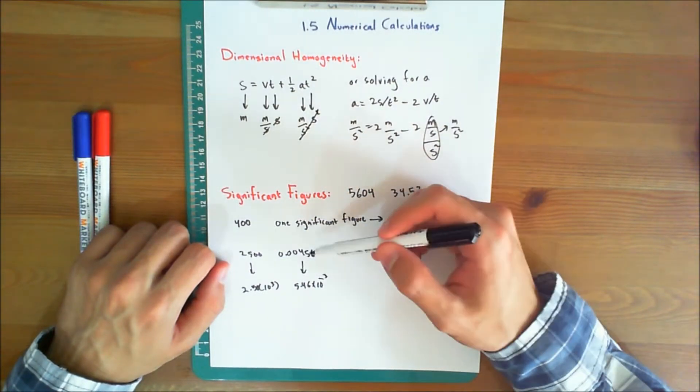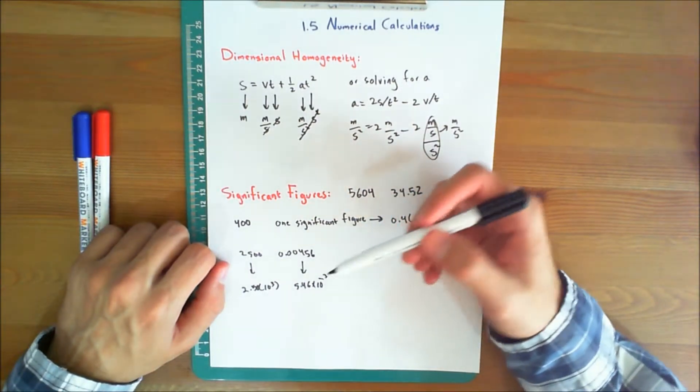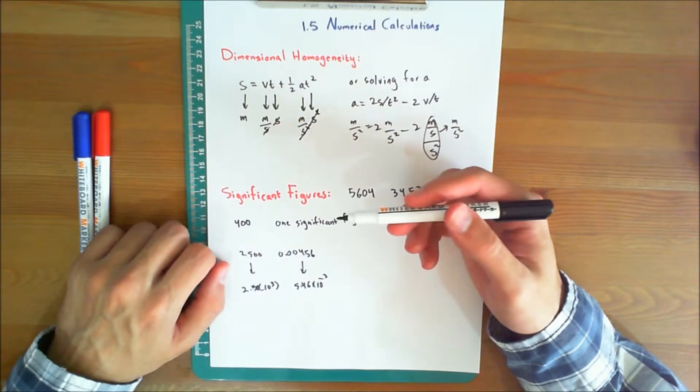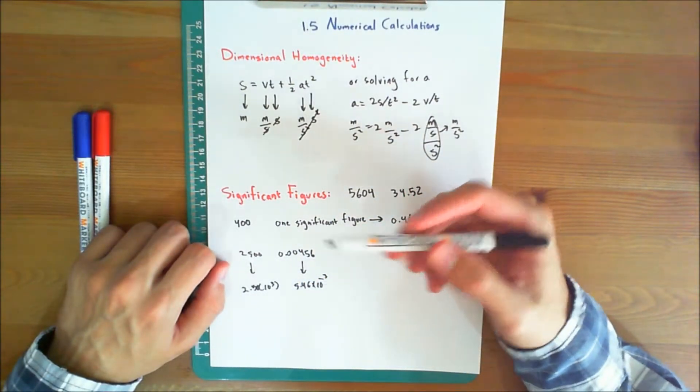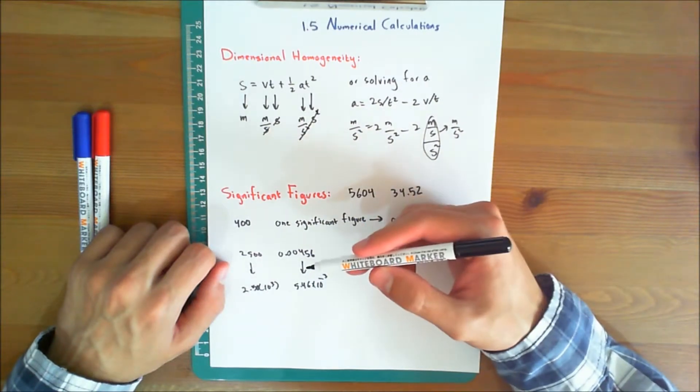Likewise, 2,500 and 0.00456 expressed to 3 significant figures would be 2.50 times 10 to the power of 3 and 5.46 times 10 to the power of negative 3.